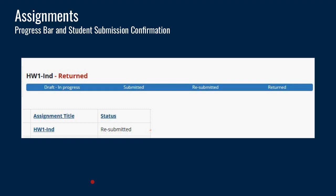Also in assignments, there is a new progress bar when students submit. As they go through the submission process, each state becomes highlighted: when they have a draft, once they've submitted, if they've resubmitted, and once it's been returned. This helps clarify the student's progress through the entire process of submitting an assignment.